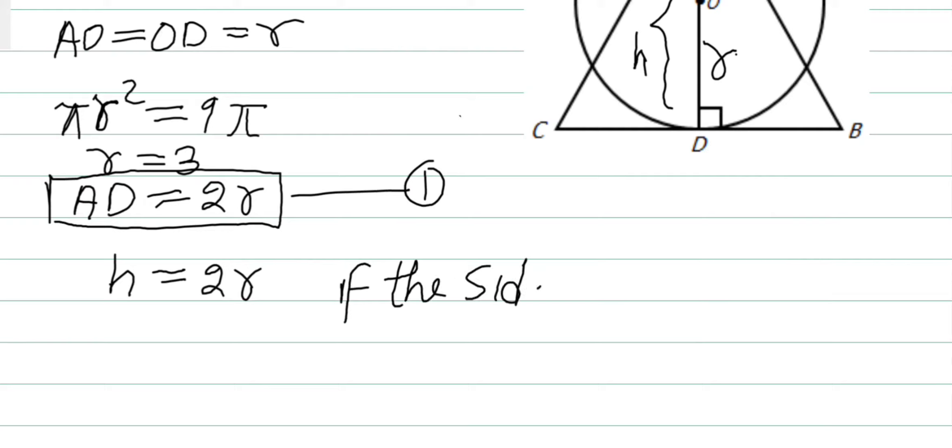The side of the equilateral triangle equals A, then height equals √3A/2, which is equal to 2R, which is 6.